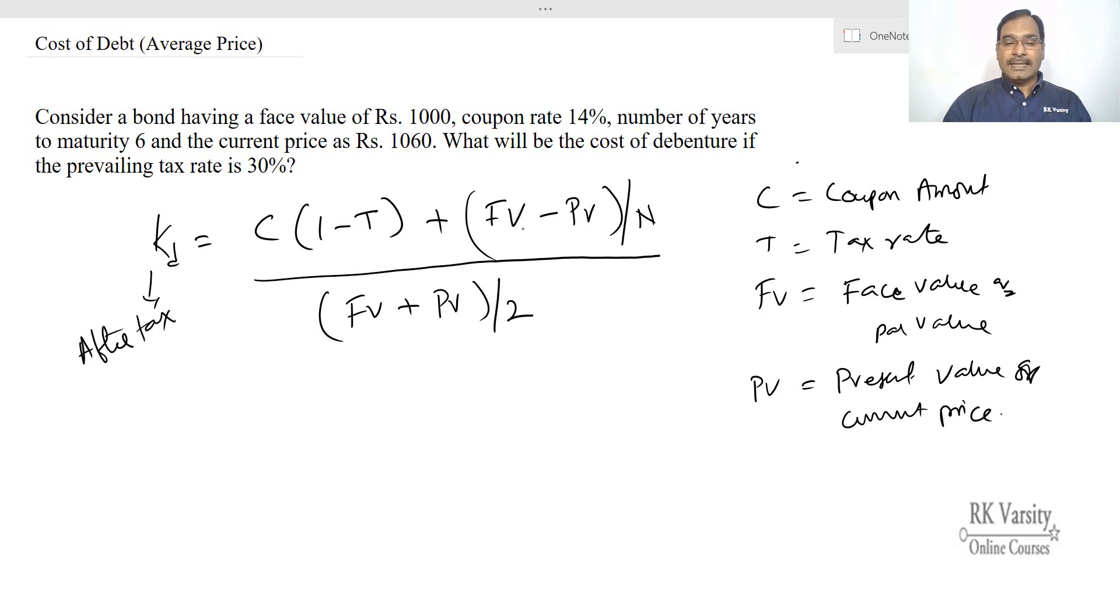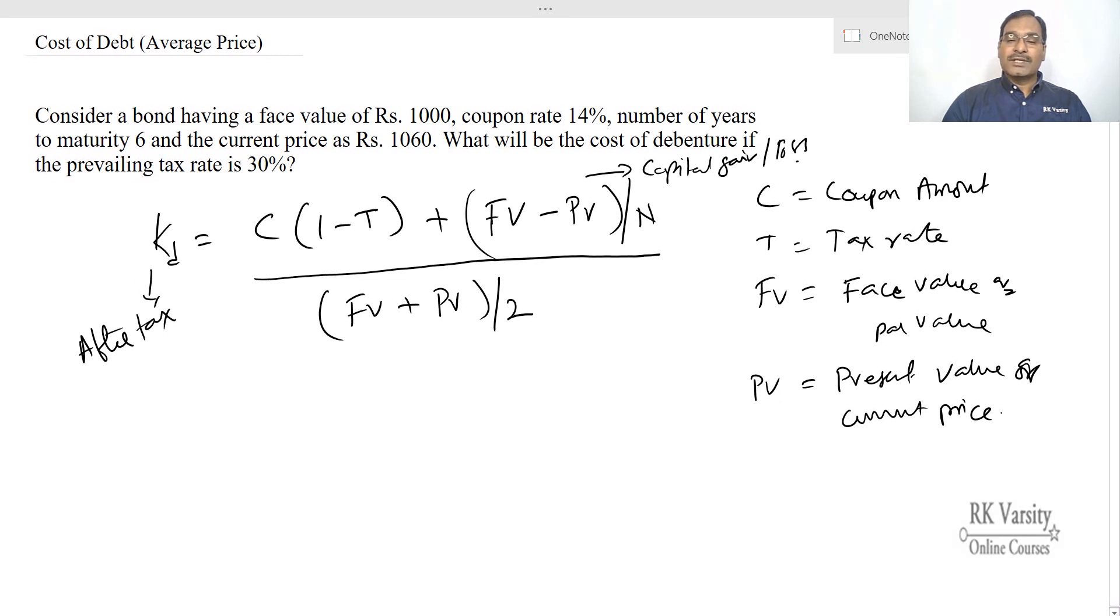Face value or par value minus present value upon n gives the capital gain or loss, which is not taxable. That is the reason why we make adjustment only to the coupon amount for tax purposes.